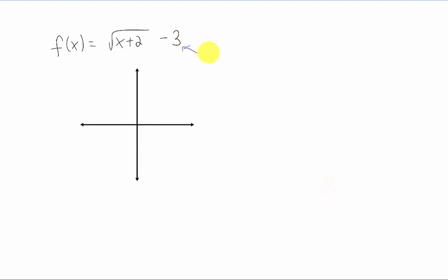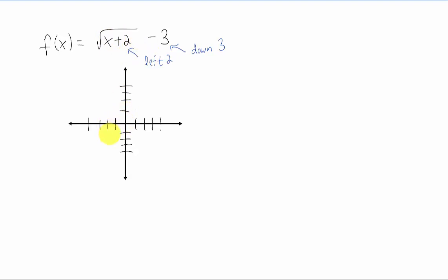This minus 3 represents a shift down 3. This x plus 2 here gives us a shift of left 2 units. So the shift of left 2 units and down 3 units is going to make our square root function start right here at the point (-2, -3).